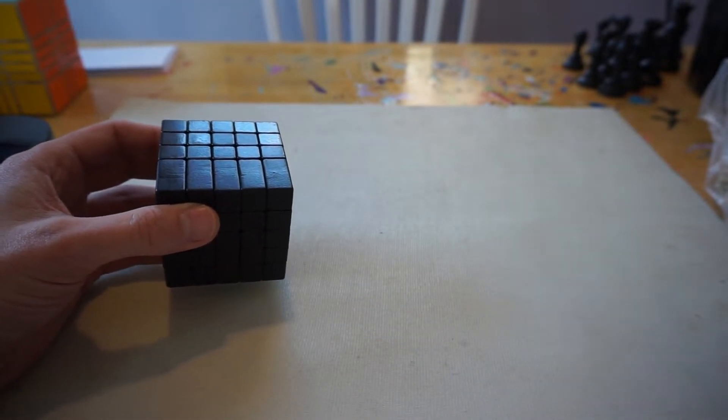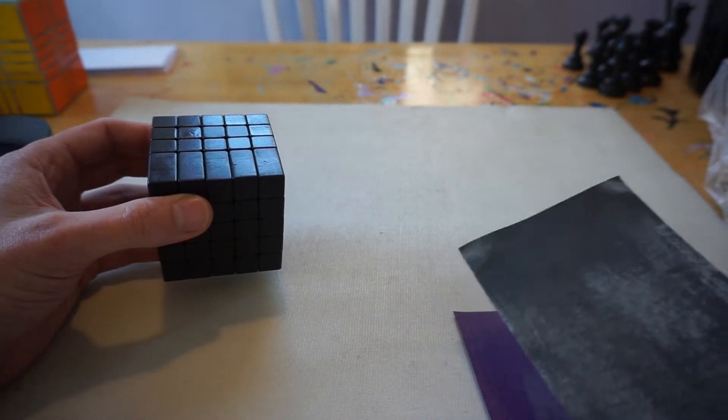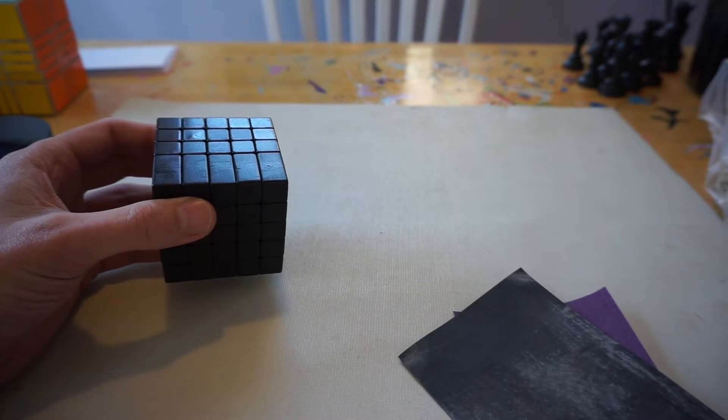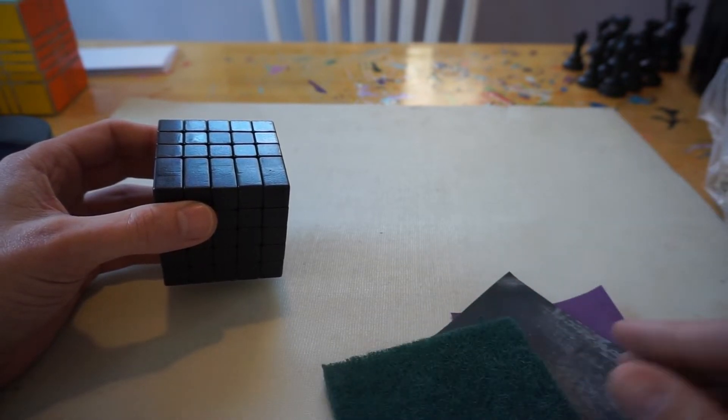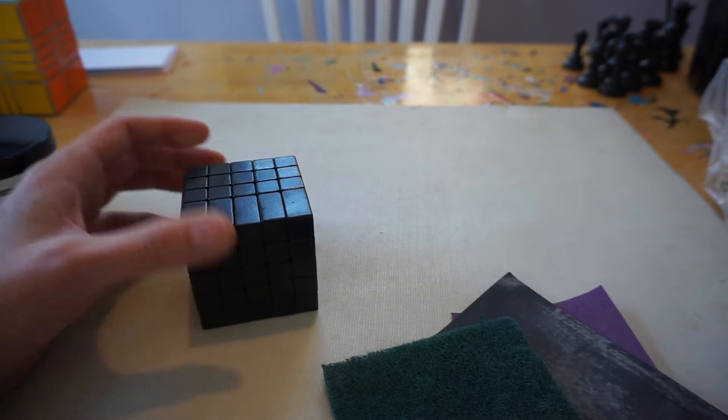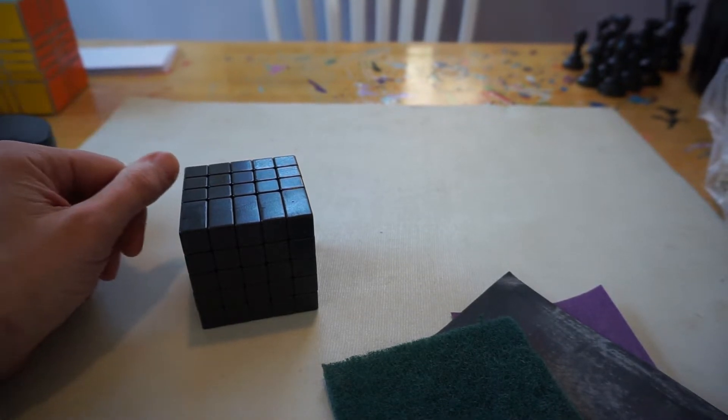Then I took a file—these were cheap files I bought at Home Depot—and then I followed that up with some 220 grit sandpaper, 400, and then finally I used Scotch-Brite. I got that idea from watching Nathan Wilson's videos.